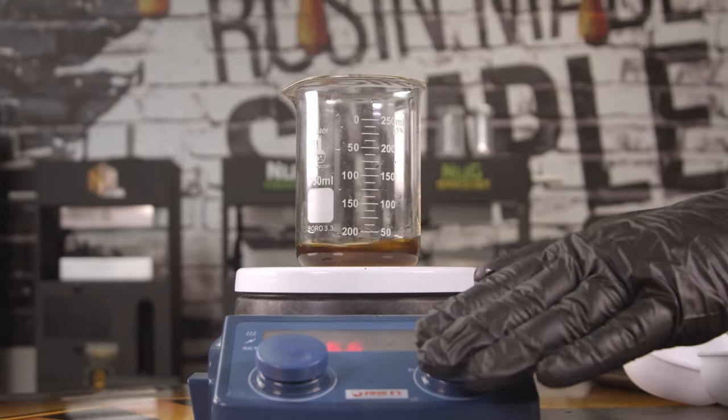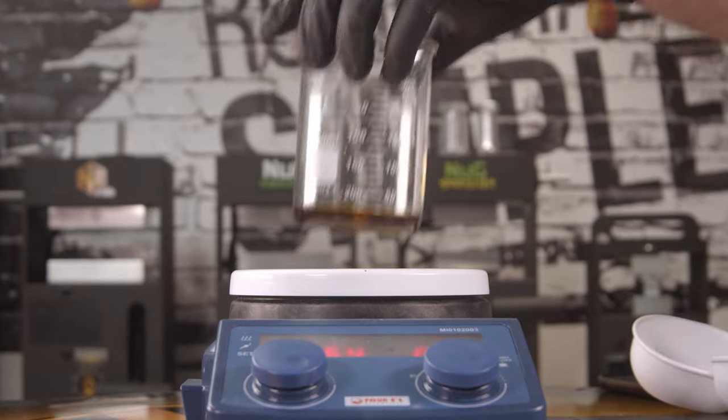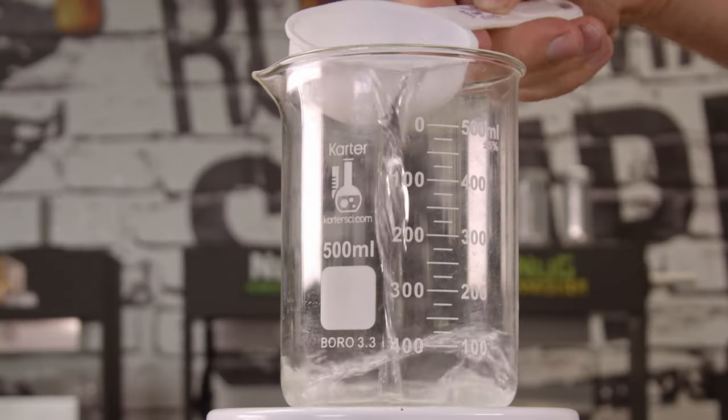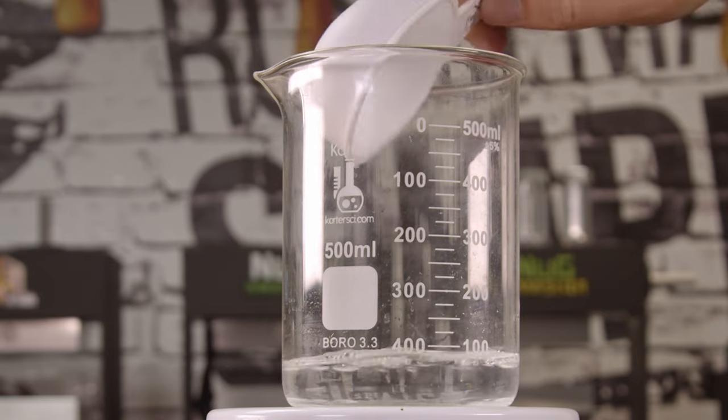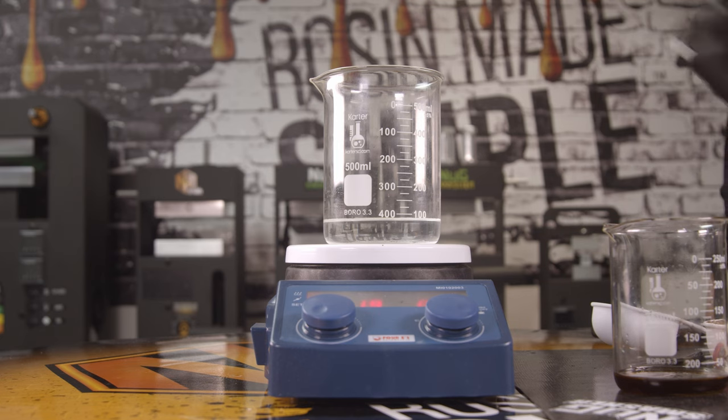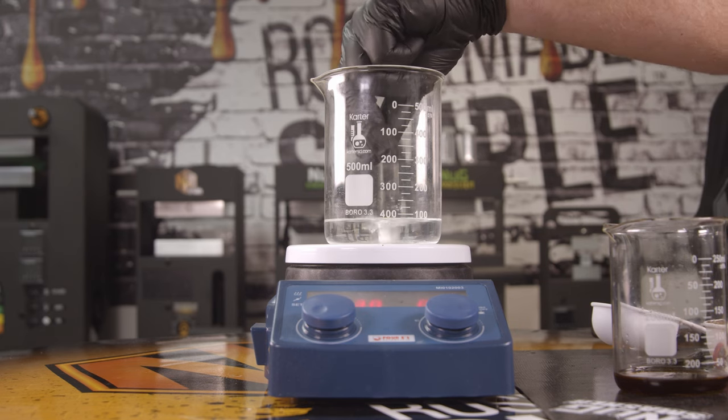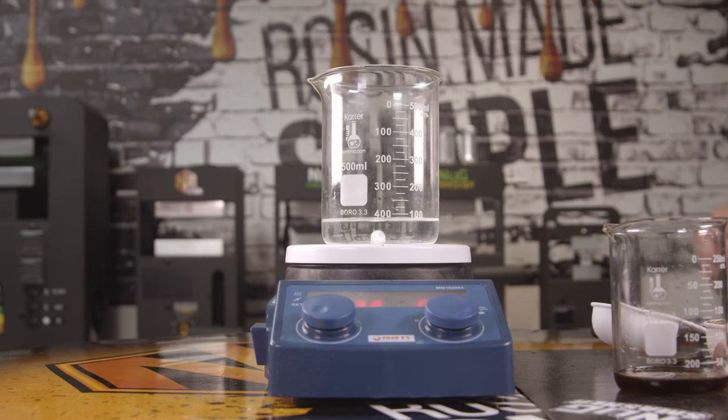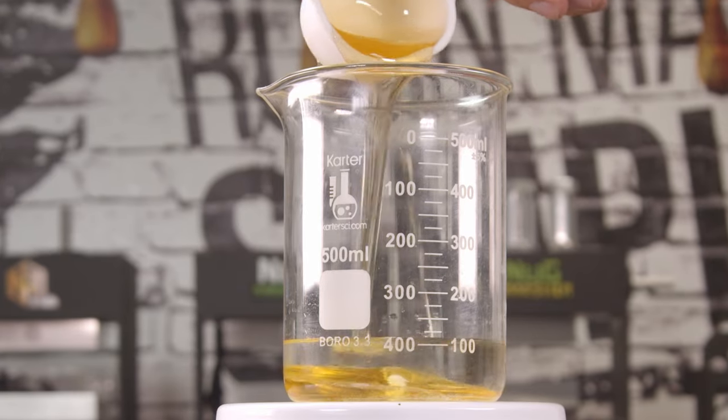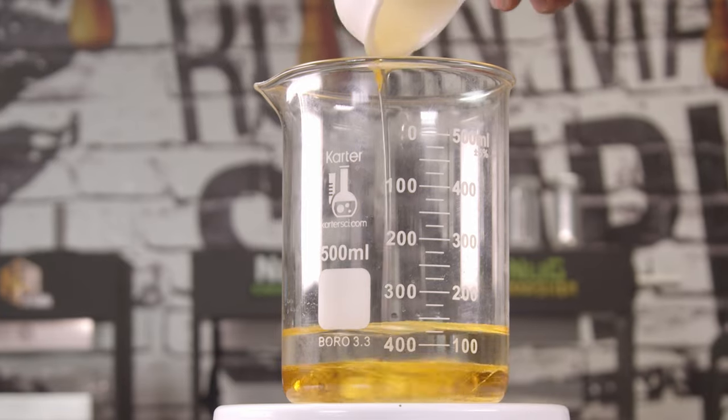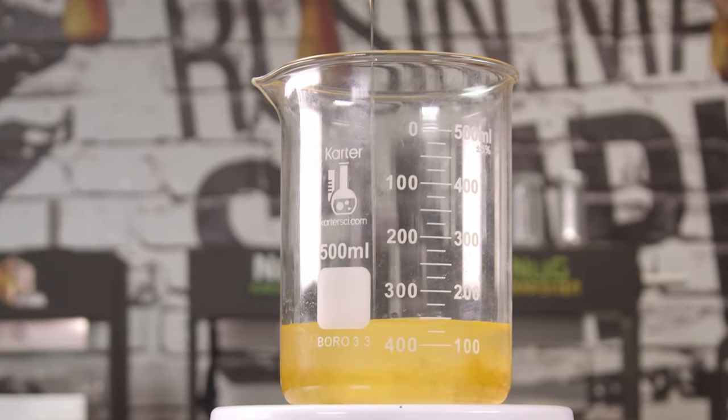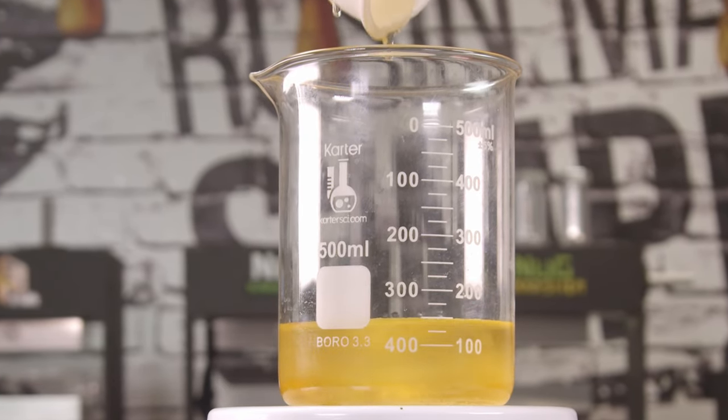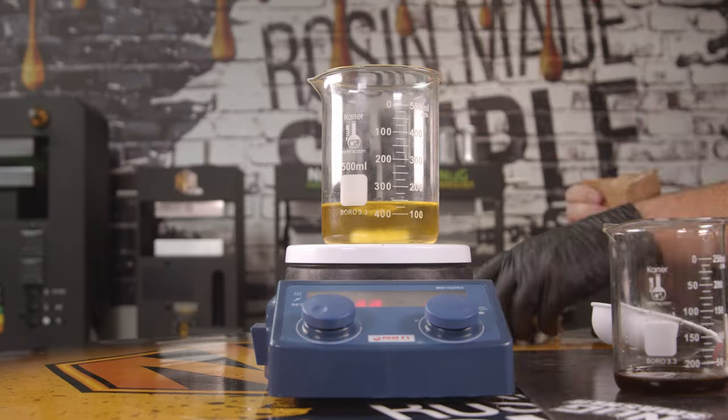Now our MCT oil is ready and we'll put it aside for later. Next, we'll grab another beaker and we'll add a quarter cup of room temperature water, and next we'll add our quarter cup of agave. Then we're going to put in three ounces of jello.